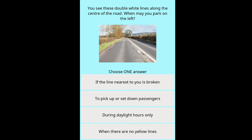Question: You see double white lines along the centre of the road — when may you park on the left? Options: if the line nearest to you is broken, to pick up or set down passengers, during daylight hours only, when there are no yellow lines.